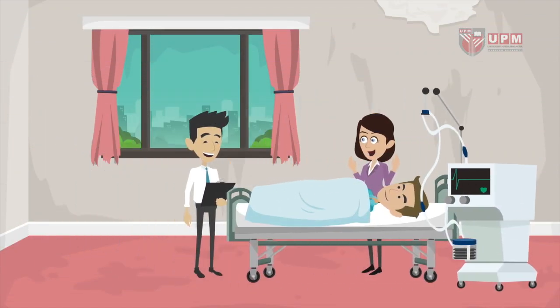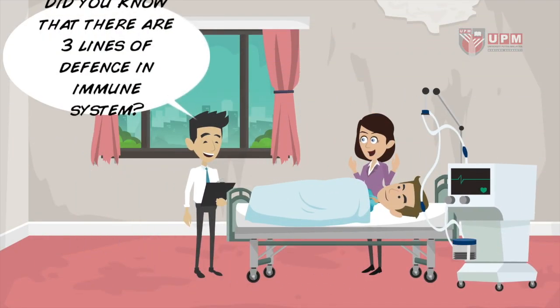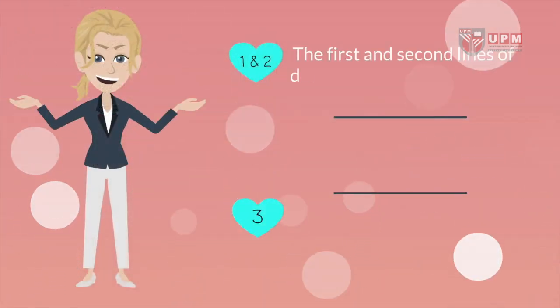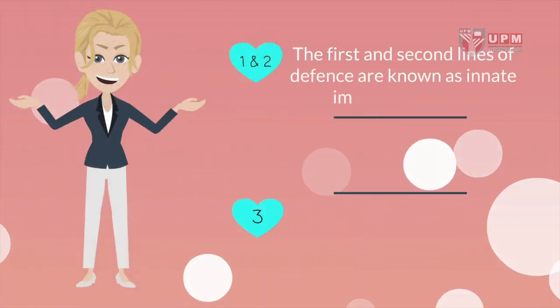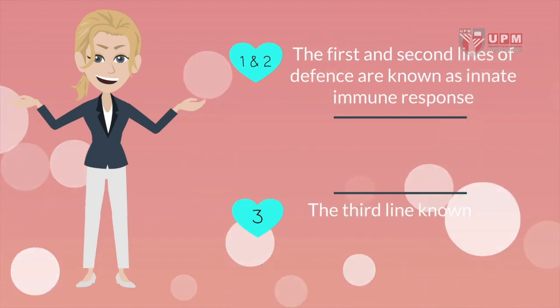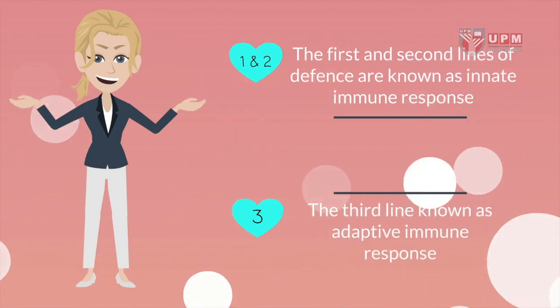Did you know that there are three lines of defense in the immune system? The first and second lines of defense are known as innate immune response, and the third line is known as adaptive immune response.